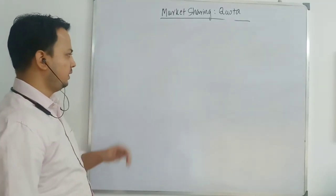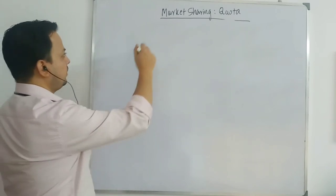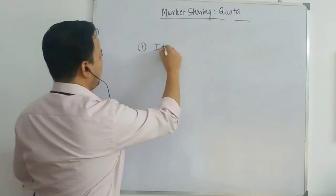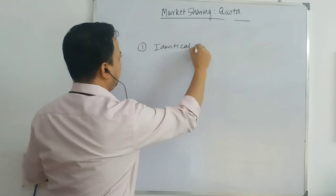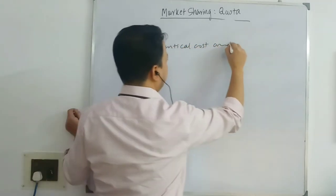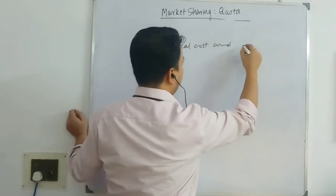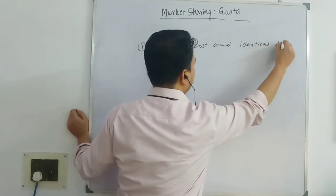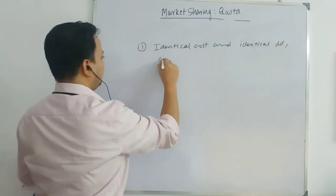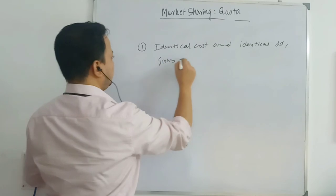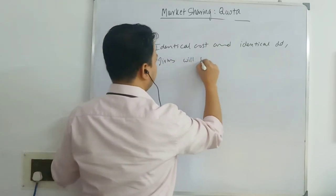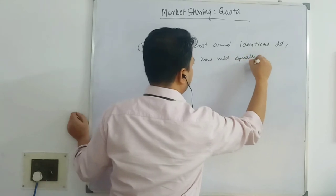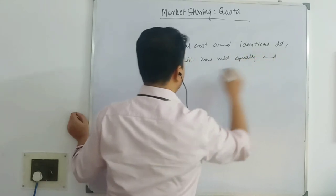Let me summarize. In the quota, when you have identical cost and identical demand, both firms will share the market equally and charge a uniform price.